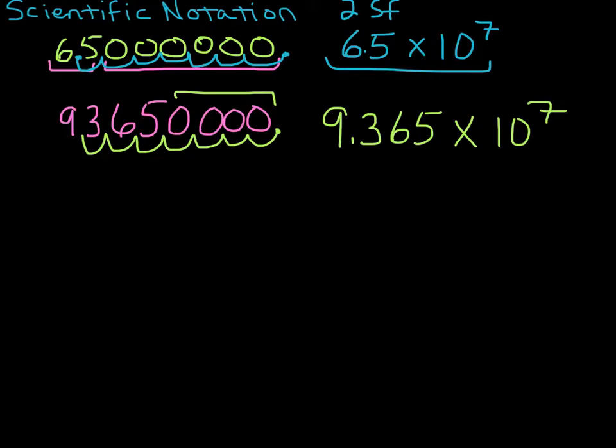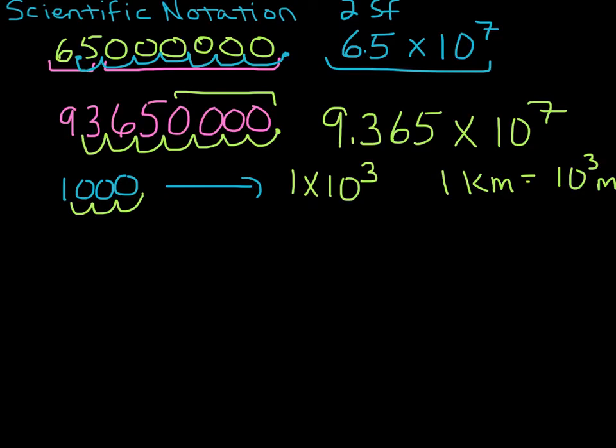Another one that you're going to see a lot is 1,000. Let's put that one in scientific notation in the same way. Put in our imaginary decimal place. One, two, three. It's going to give us 1 times 10 to the 3. And remember, 1 kilometer is equal to 10 to the third meters. So that's just this part. These two things mean the same thing.